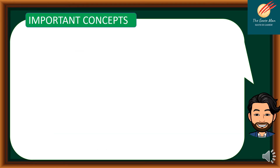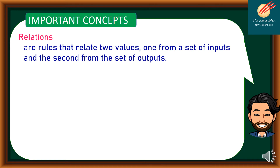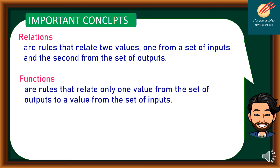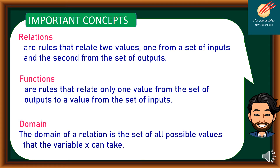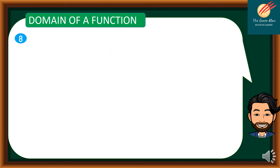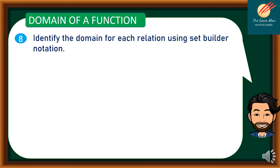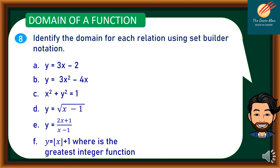Let's recall the important concepts. Relations are rules that relate values — one from a set of inputs and the second from the set of outputs. Functions are rules that relate only one value from the set of outputs to each value from the set of inputs. The domain of a relation is the set of all values that the variable x can take. Let's identify the domain for each relation using set-builder notation.